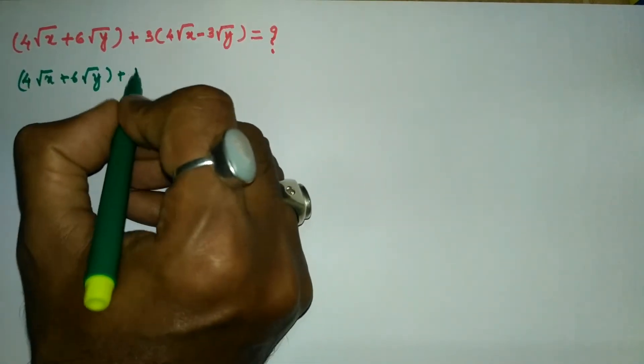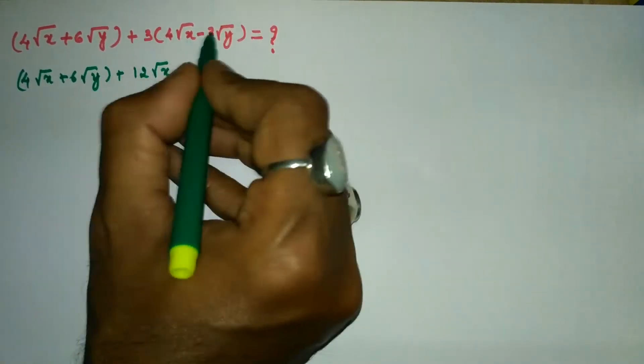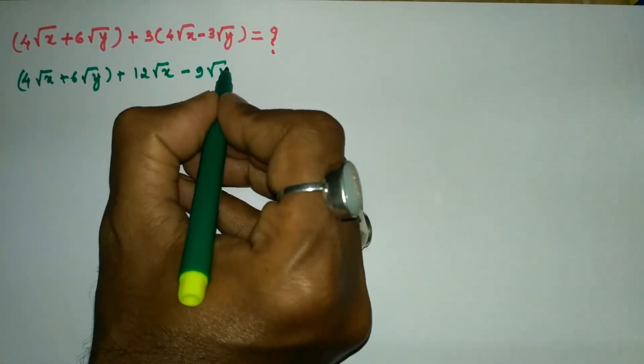3 times 4 is 12√x, and 3 times -3 is -9√y.